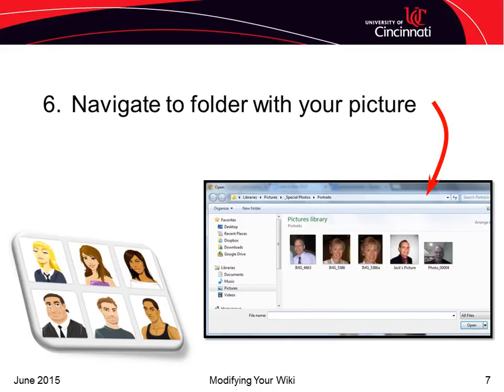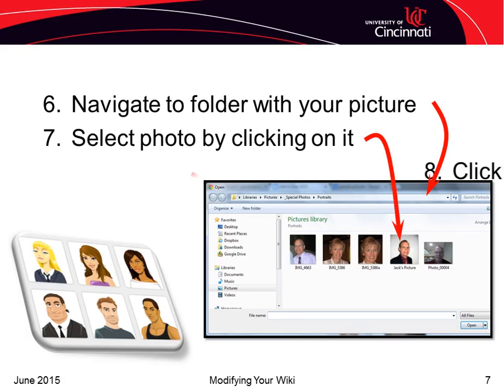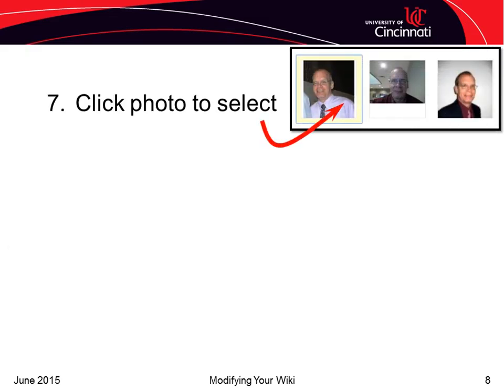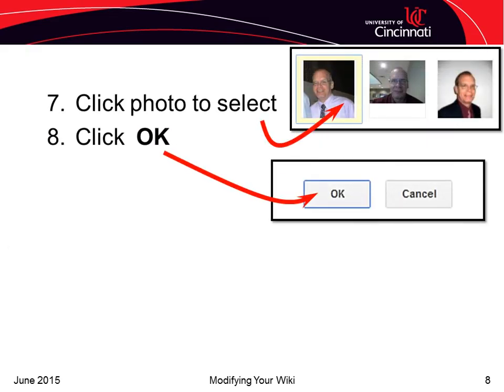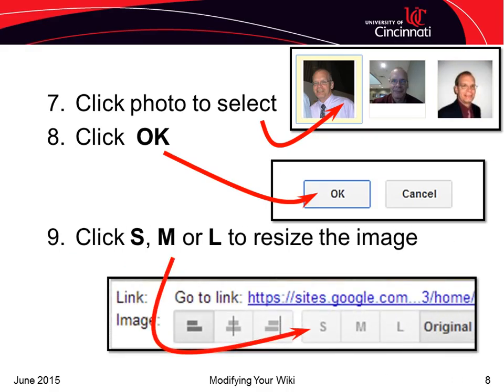You will now need to navigate to the folder that contains your picture. This assumes, of course, that you have a digital likeness that you would like to upload. If not, get a digital camera or cell phone, take your picture, and upload it to your computer. Select your photo and then click Open. Select the photo and click OK. You may have to resize the photo by clicking Small, Medium, or Large — labeled SML — depending on the size of the original photo.